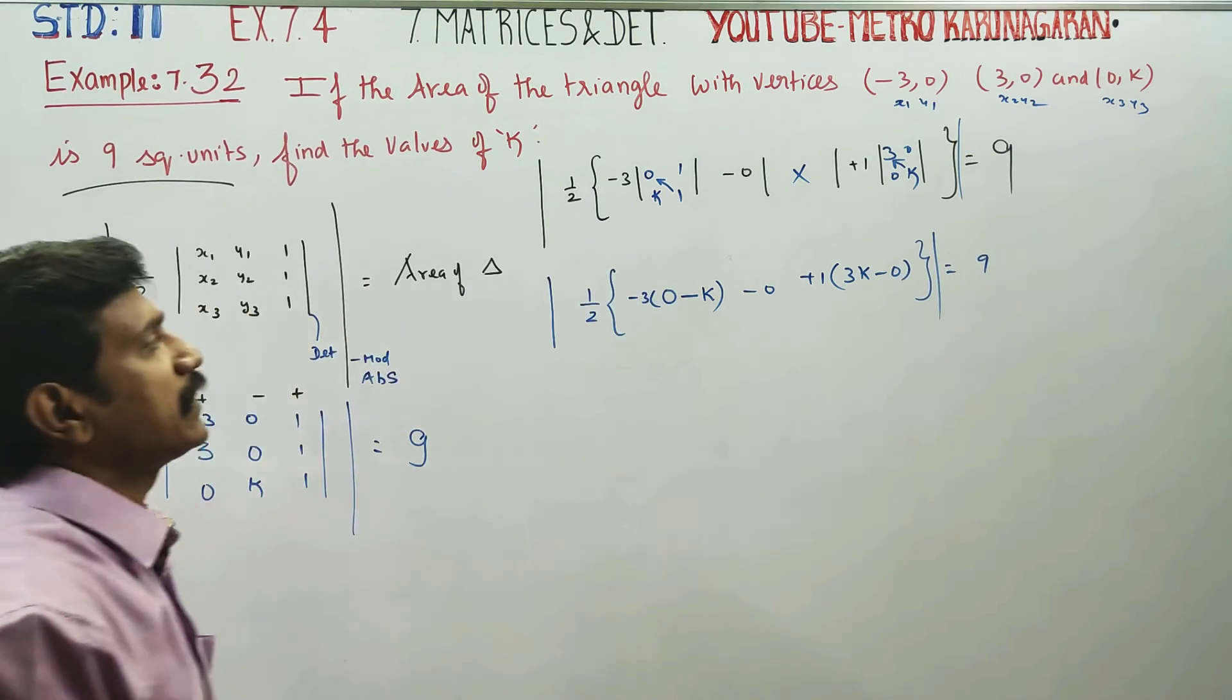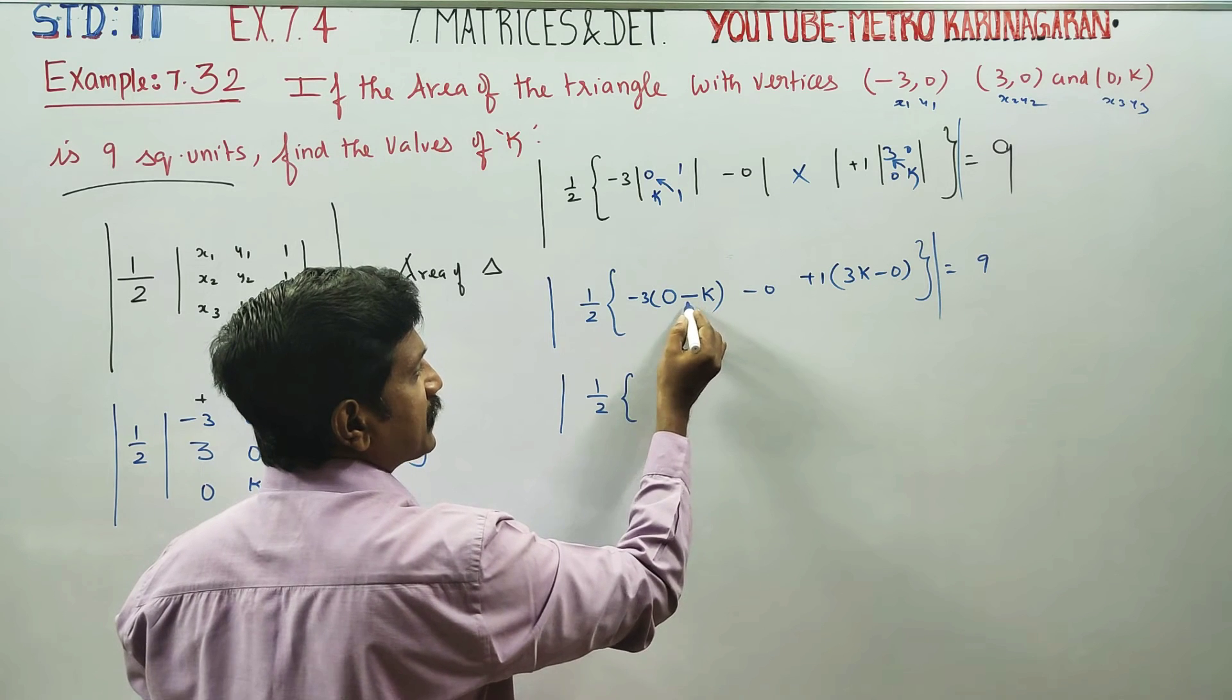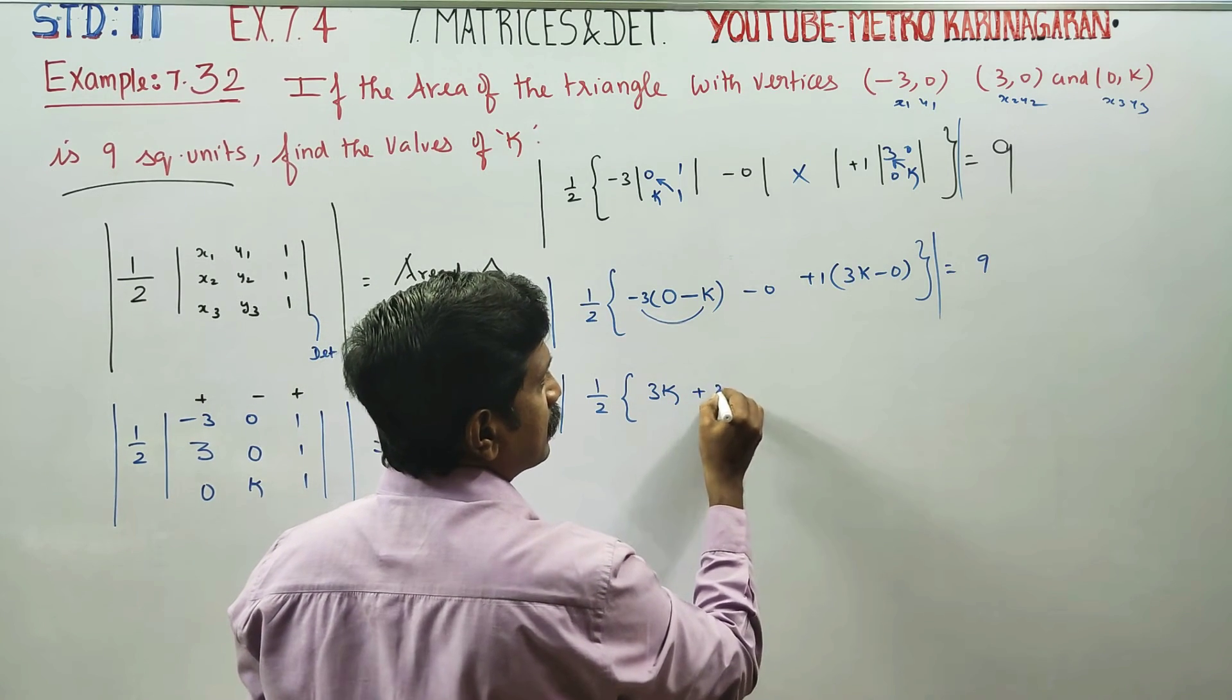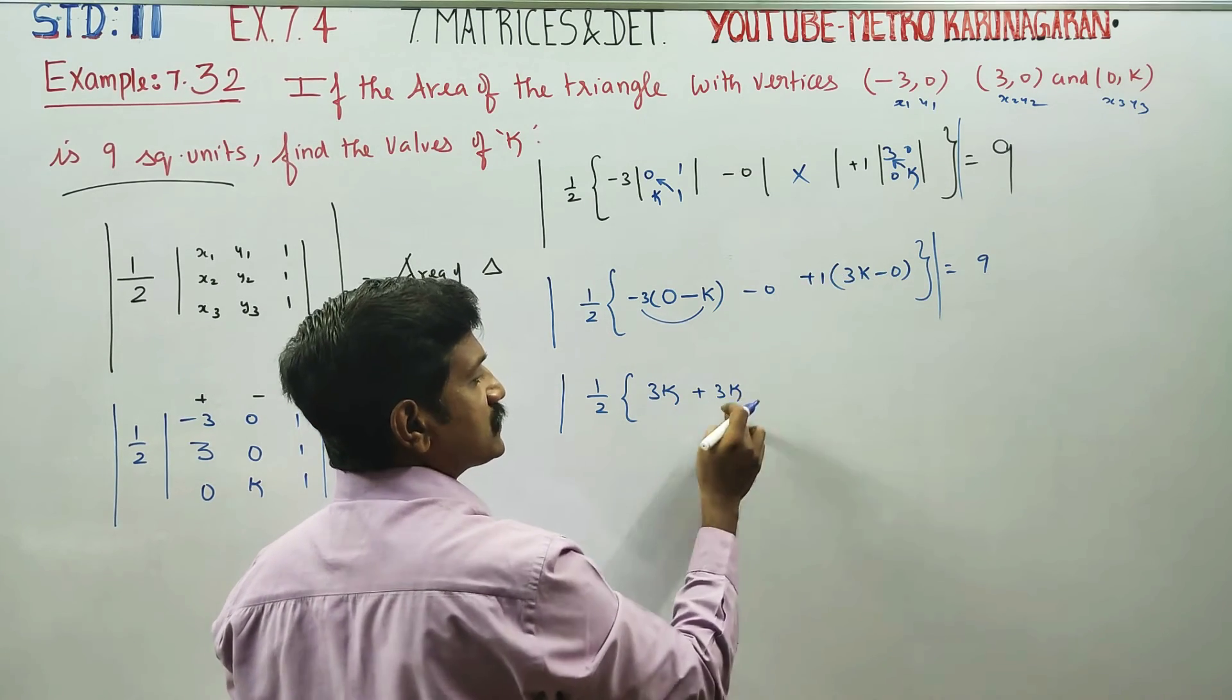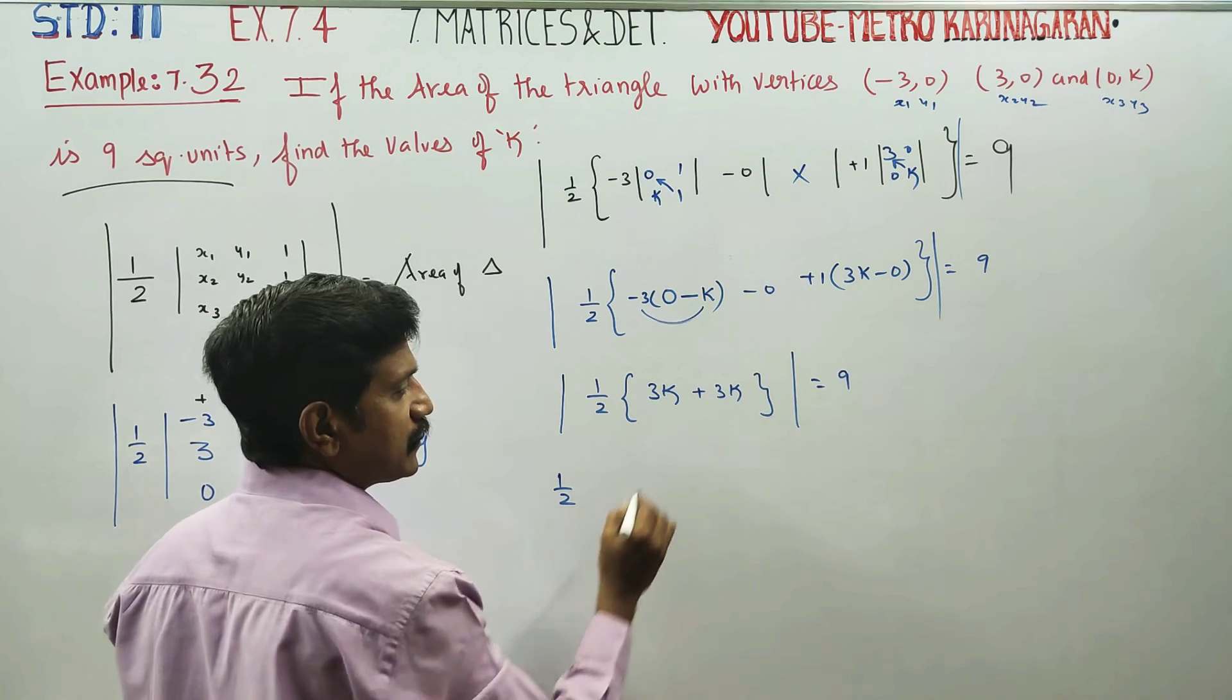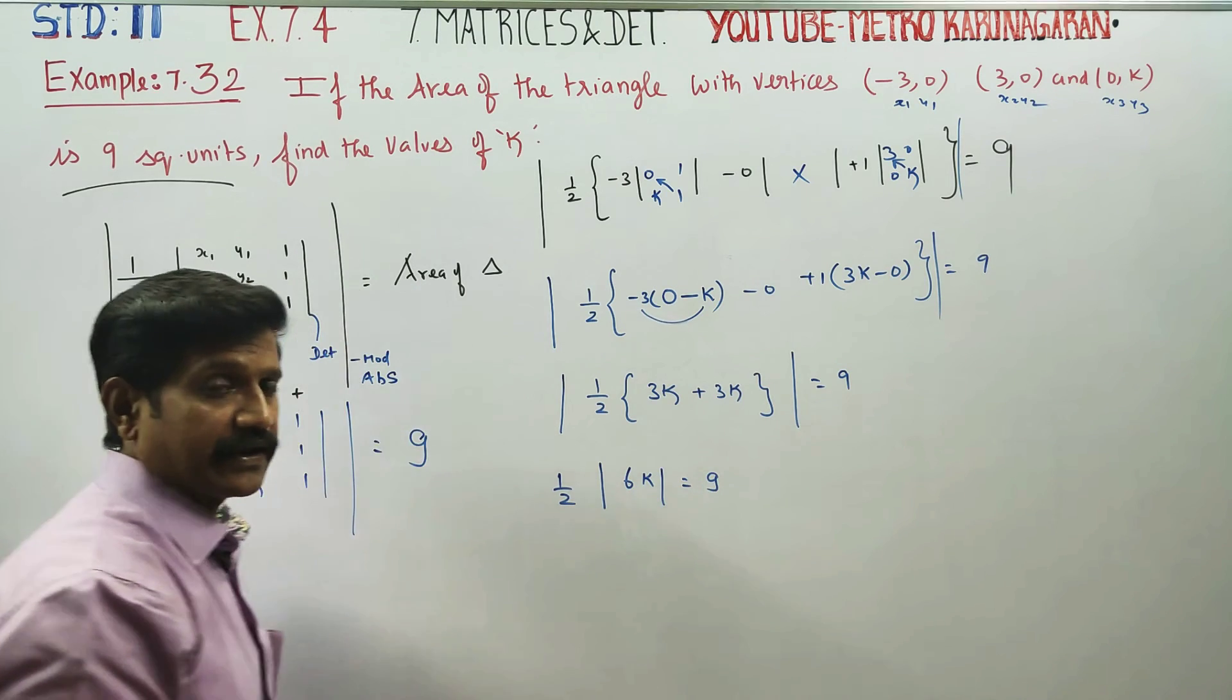Absolute value 1 by 2. 0 minus k is minus k. Minus into minus plus 3K. 3K minus 0, 3K into 1 is 3K. Is equal to 9. 1 by 2 absolute value of 3 plus 3 is 6K. Is equal to 9.